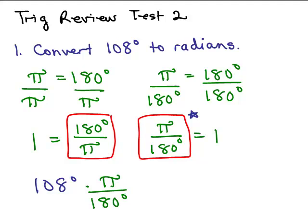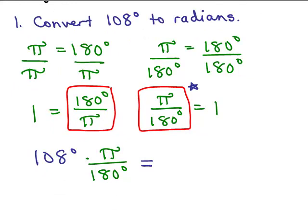Now when you do that, the degree symbols will cancel out. I'll have a π in my answer still, and so what I need to do is just reduce the 108 over 180. So you have to think what number goes into both of those. I can see that 9 goes into both of those numbers, but you could divide by 2, you could divide by 3, you could divide by 6, whatever you could see, but just reduce it as far as you can go.